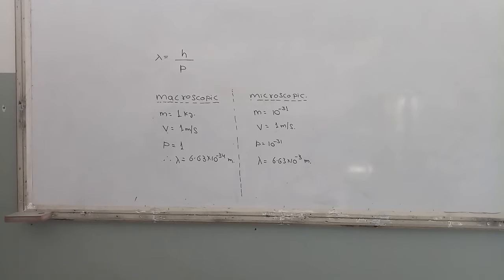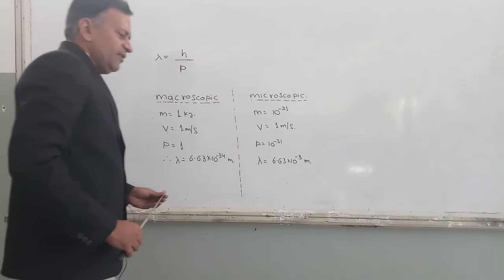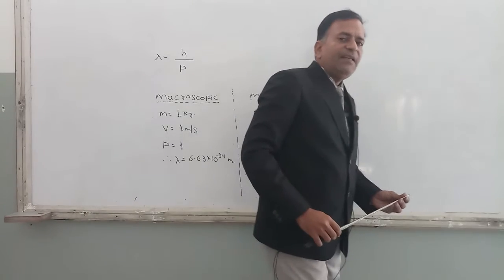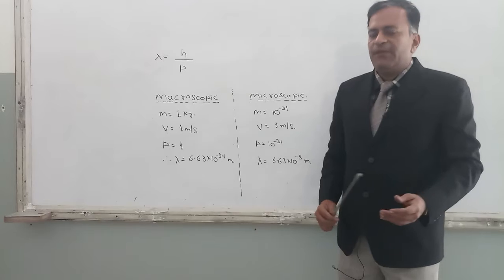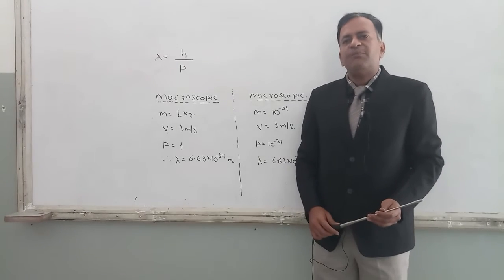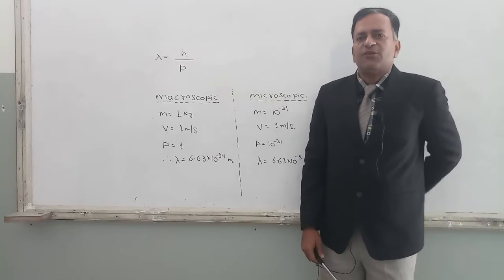de Broglie has given us a theory that matter can also behave like waves, and the number which associates the wave nature with the particle nature is Planck's constant.